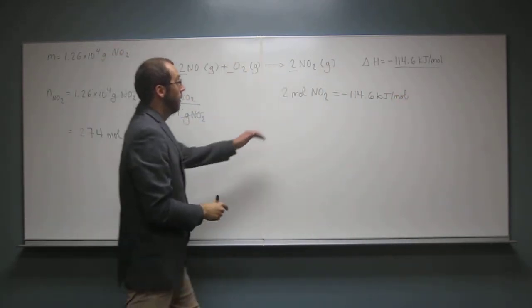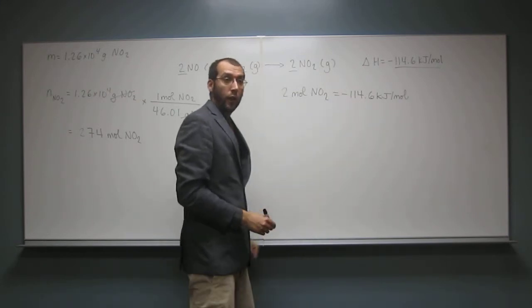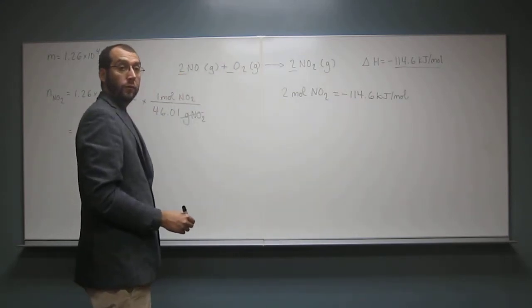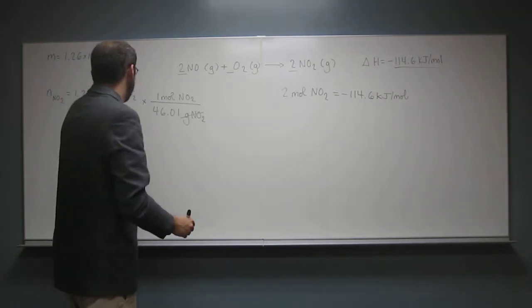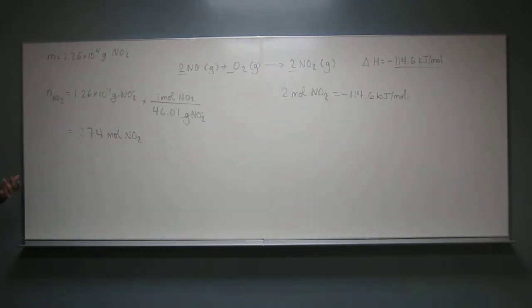So for every two moles, we give off 114.6 kilojoules. So it would be the same thing if we use the amount. So let's just put that in here. So now it wants us to figure out, well, what's the energy given off if we've made that many, if we've made this much grams?